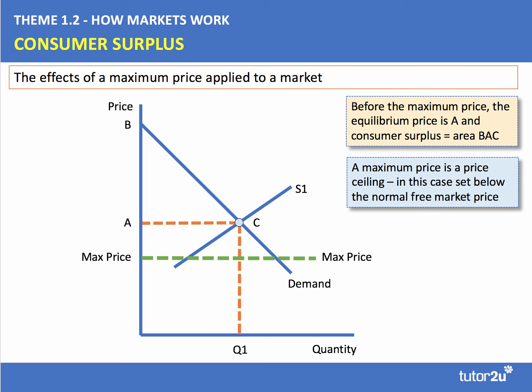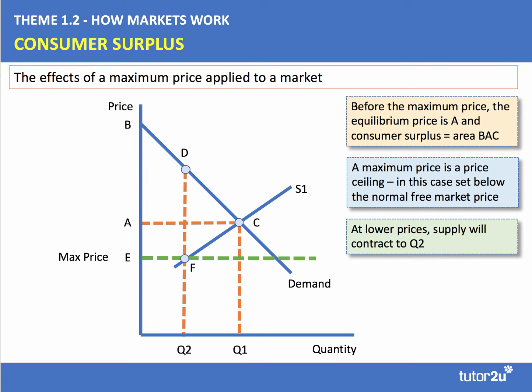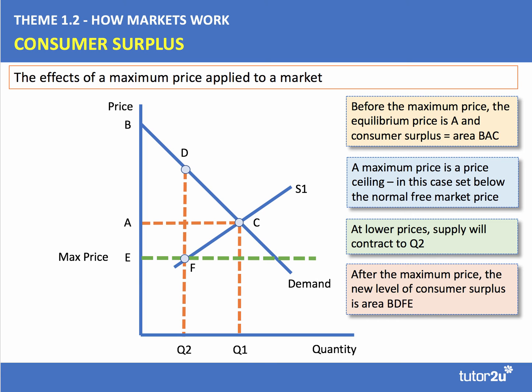The maximum price is shown by the dotted green line at price E. At this lower price, supply will contract to Q2 — producers, subscribing to the profit motive, will be less willing and able to supply to the market as they're getting a smaller price. So supply will contract from C to F, with quantity now Q2 priced at E. After the maximum price, consumer surplus is the area BDFE — the area below the demand curve and above the price — but we're now constrained by a smaller quantity, which affects some consumers who are no longer in the market.